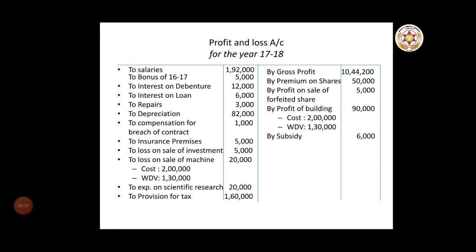Now here is an illustration based on managerial remuneration. A profit and loss account has been given for the year 1780. On the debit side: salary 1,90,000; bonus of 16-17 is 5,000 (this is the previous year bonus since the P&L is for 1780); interest on debenture 12,000; interest on loan 6,000; repairs 3,000; depreciation 82,000; compensation for breach of contract 1,000; insurance premises 5,000; loss on sale of investment 5,000; loss on sale of machine 20,000.